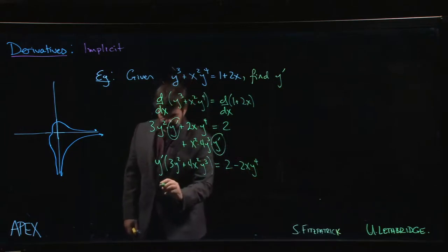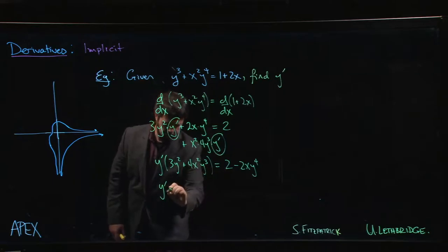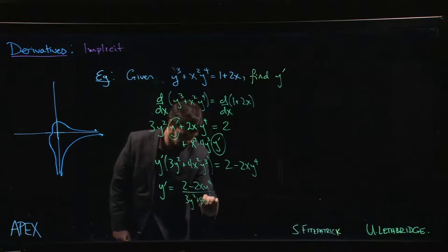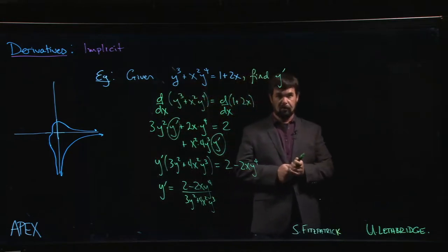Now, solving for y prime is simply a matter of dividing by the stuff that we factored out. So we have 2 minus 2xy to the 4 over 3y squared plus 4x squared y cubed. And that gives us an expression for y prime.